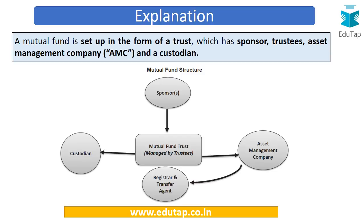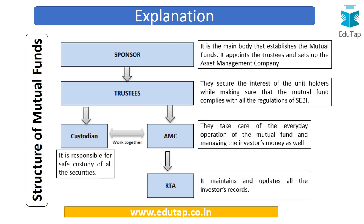To answer this, we must understand the structure of a mutual fund. A mutual fund is set up in the form of a trust and involves a sponsor, trustees, an asset management company, and a custodian, each with a separate role. The sponsor is the entity ultimately promoting and establishing the mutual fund, performing important functions like appointing trustees and setting up the asset management company.